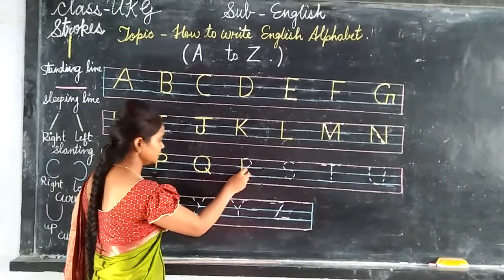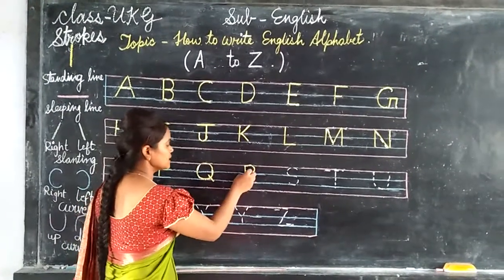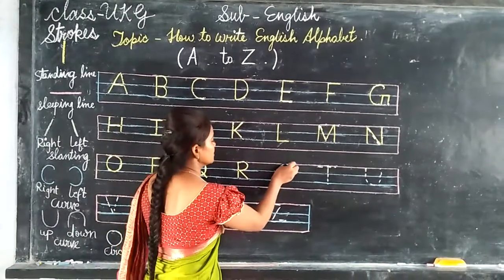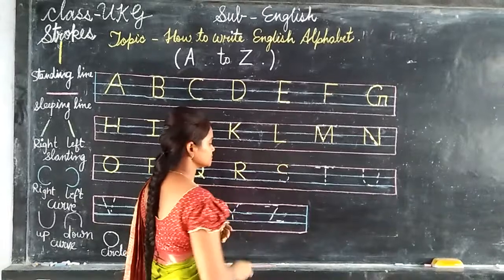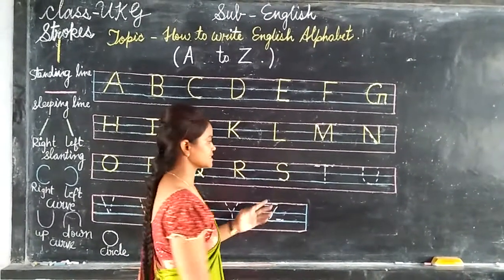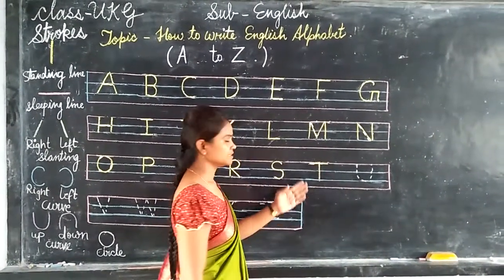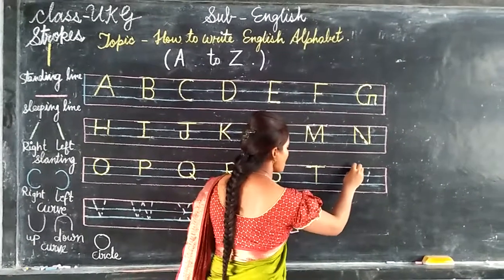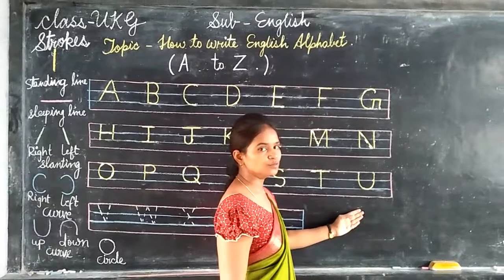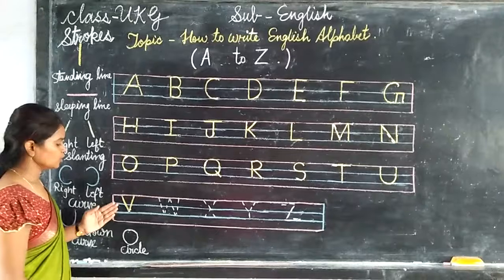Standard line, small left curve, left sliding line. R. Right small curve, left small curve. S. Standard line, sleeping line. T. Upward curve. U. Left slanting line, right slanting line. V.